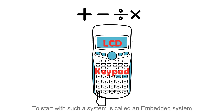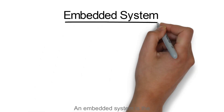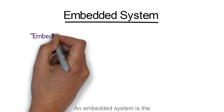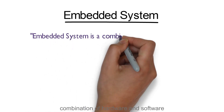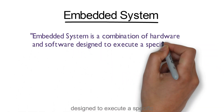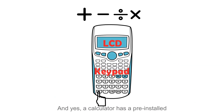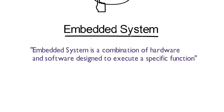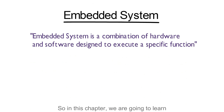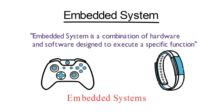To start with, such a system is called an embedded system. An embedded system is a combination of computer hardware and software designed to execute a specific function. And yes, a calculator has a pre-installed software in it. So in this chapter, we are going to learn about the embedded system in brief.